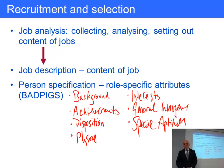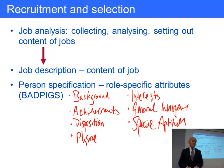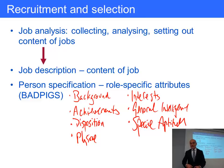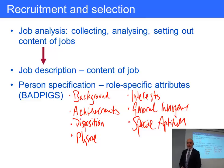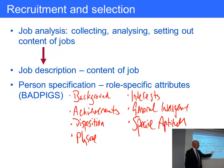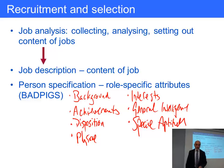S stands for special aptitudes. A good example is computer programming — it's well known that some people have a particular aptitude for coding. One thing you can do with special aptitudes is design aptitude tests as part of the recruitment process, to assess whether candidates are likely to be suitable for learning programming languages or other specialist skills.